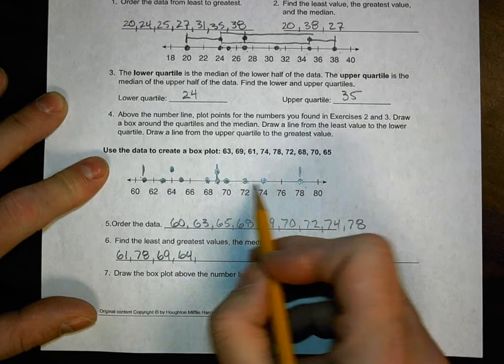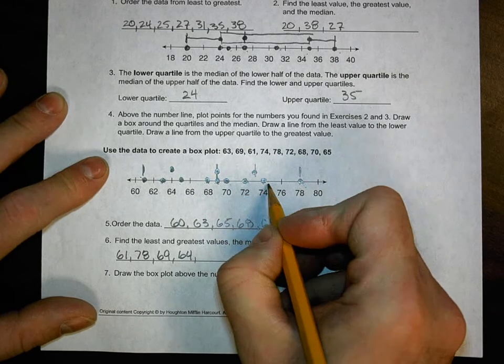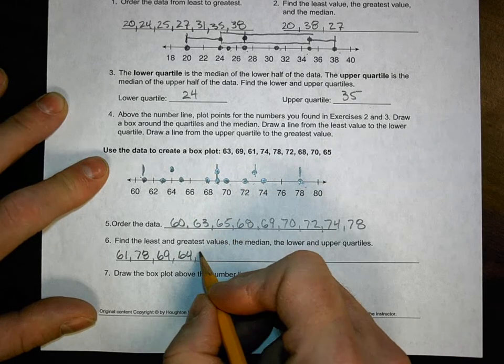And my upper quartile, 1, 2, 3, 4, it's going to be right here between these. So 72 to 74. In the middle, that's 73.